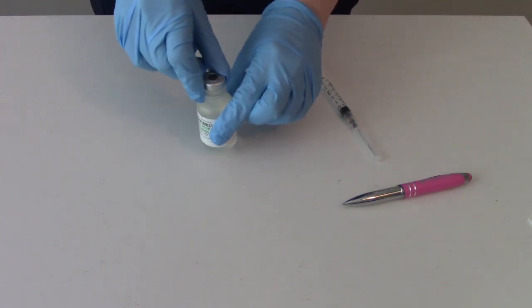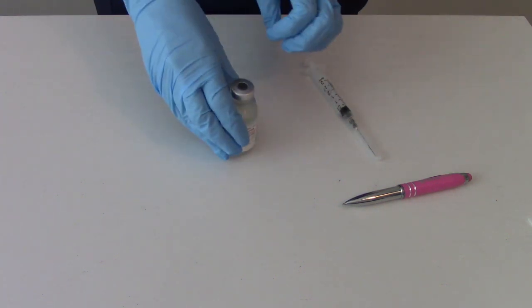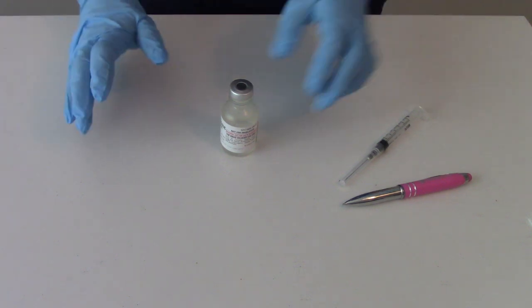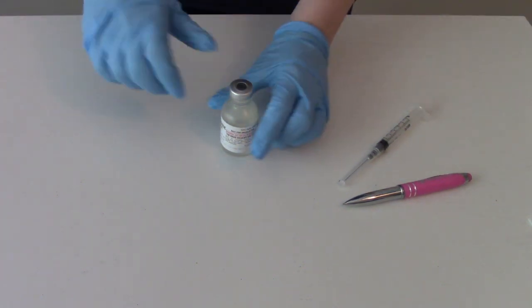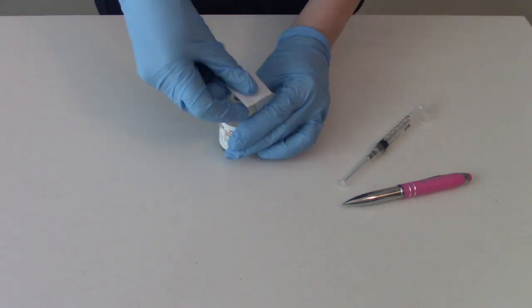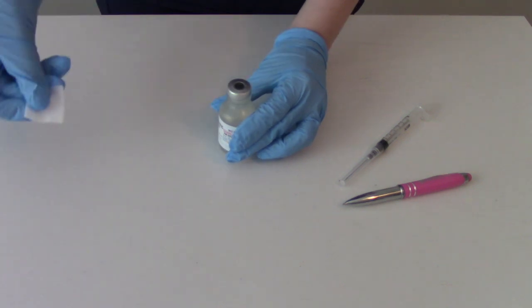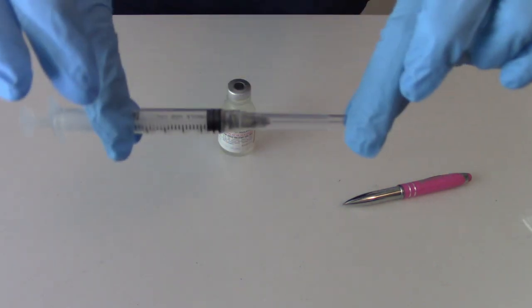This is a vial I've used before, it's not really real, it's just for demonstration purposes. Let's just pretend it's a vaccine, like we're going to give the flu shot or something like that. We would pop off the top if it had a top on it, wipe it with the alcohol wipe, and then we would get our syringe and our needle ready.